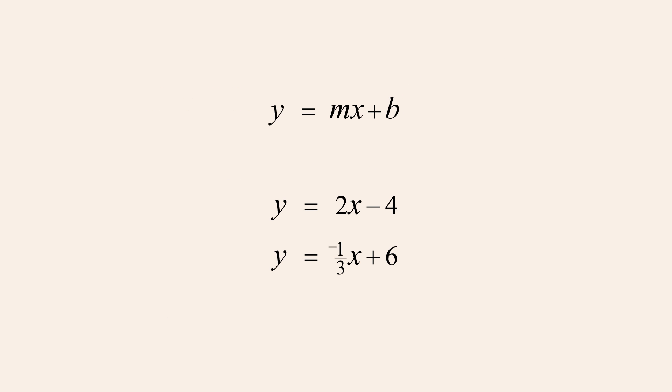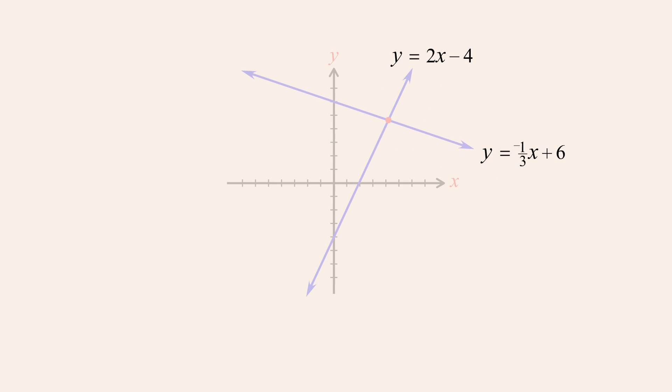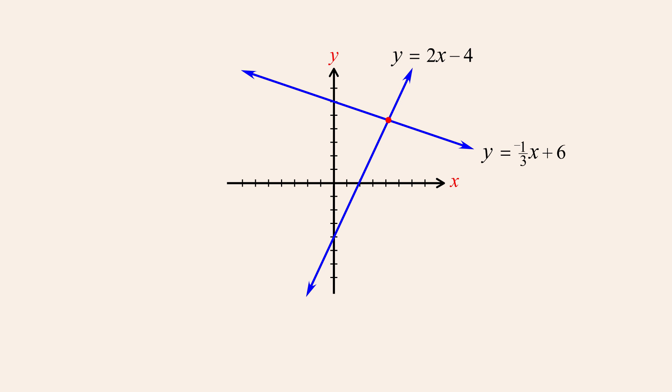On the other hand, if the equations have different values for m, then the slope is different for each equation. Regardless of the value of b, the lines cannot be parallel and must intersect somewhere at a single point. The system therefore has one solution and is consistent, and since each equation describes a different line, the equations are independent.